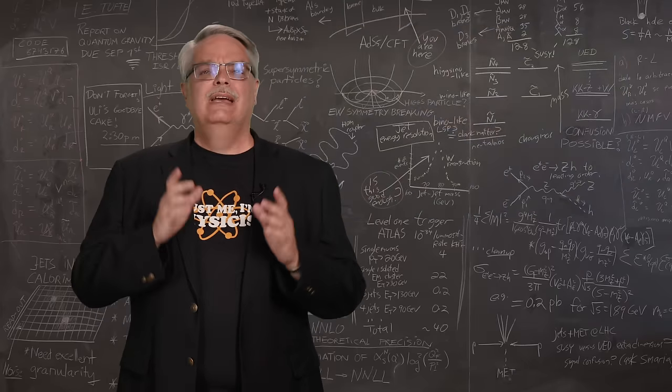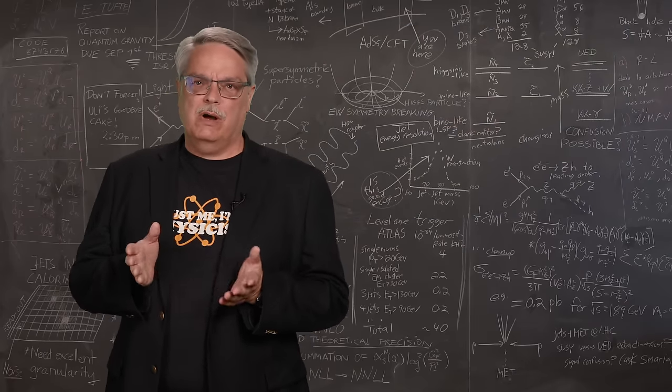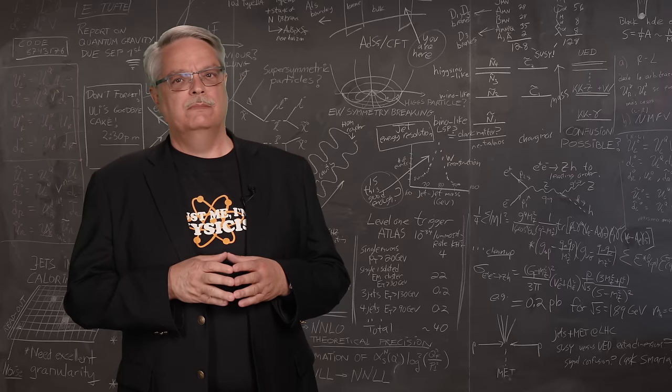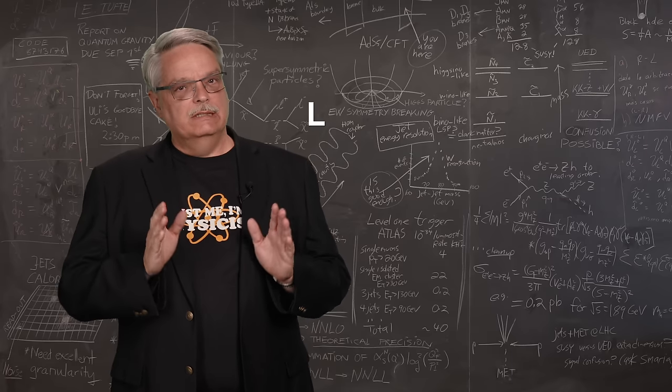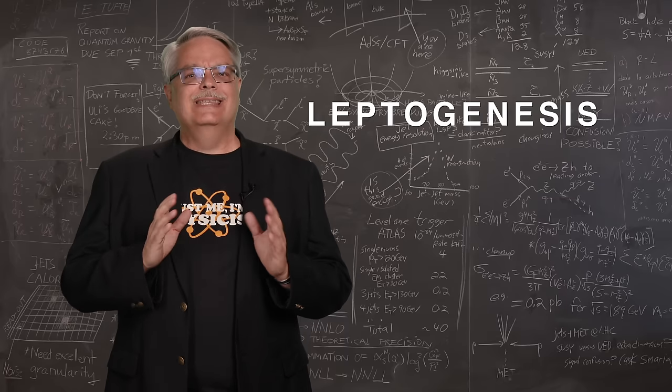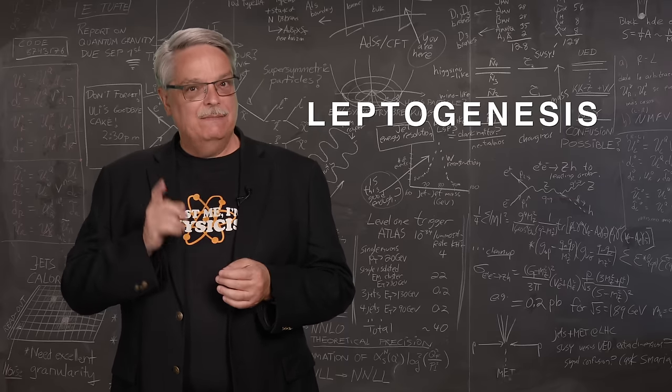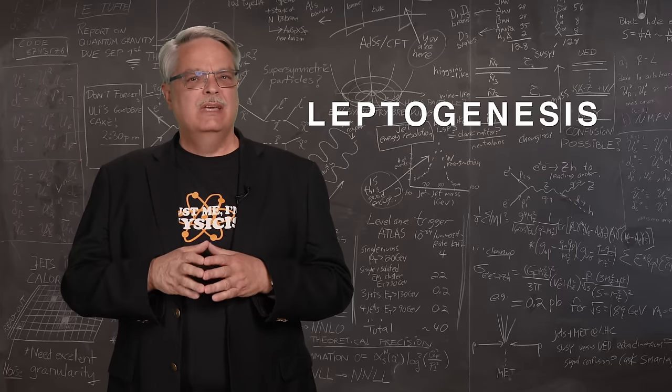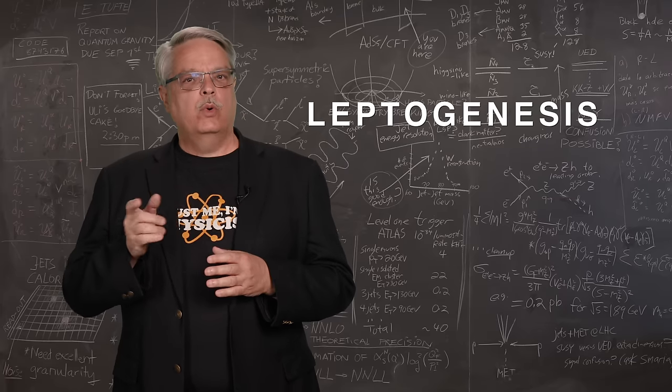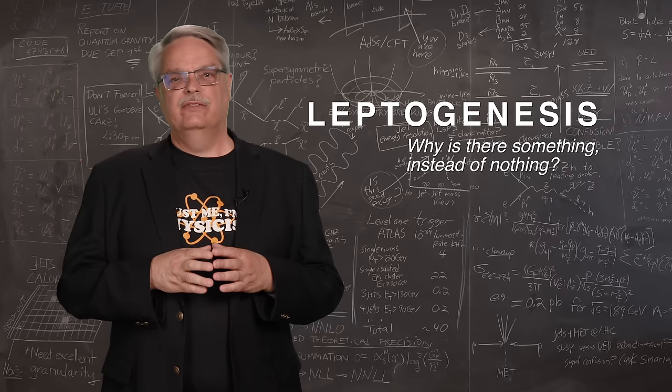So in this video, I'm going to take a stab at explaining one of the most complex ideas popular in modern particle physics. This idea is called leptogenesis. Leptogenesis is the name of a theory which may, and I emphasize the word may, answer one of the deepest and almost philosophical questions of physics: Why is there something instead of nothing?